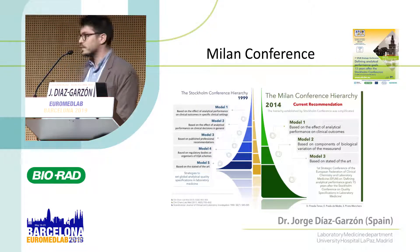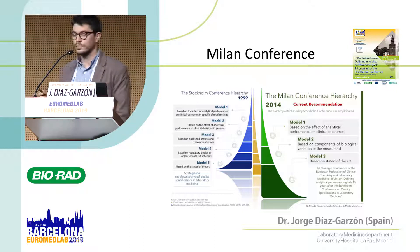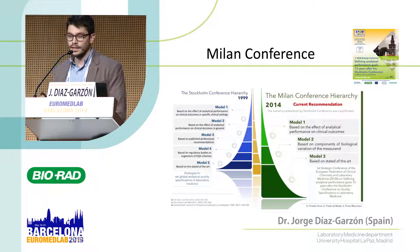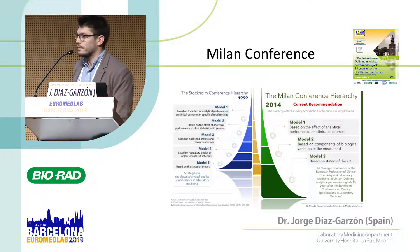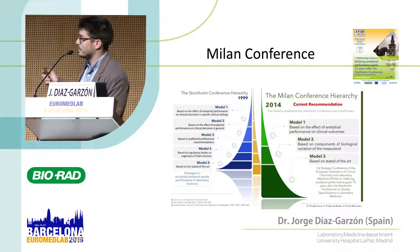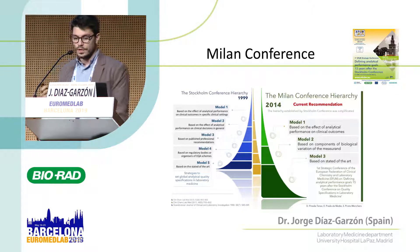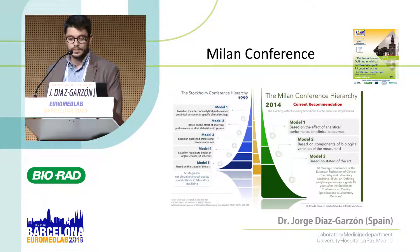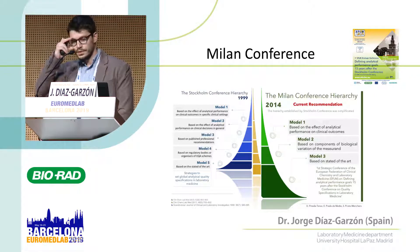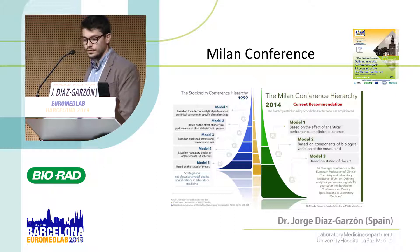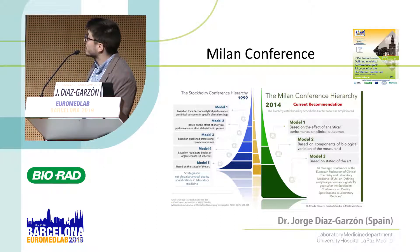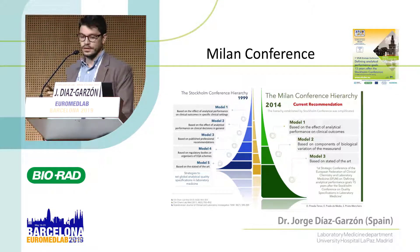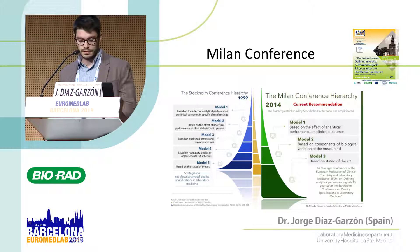Fifteen years after the Stockholm consensus took place, the Milan Congress, as you know, reduced the models from five to three. The first one is based on clinical outcomes. The second model is based on biological variation, and the third one is based on the state of the art.